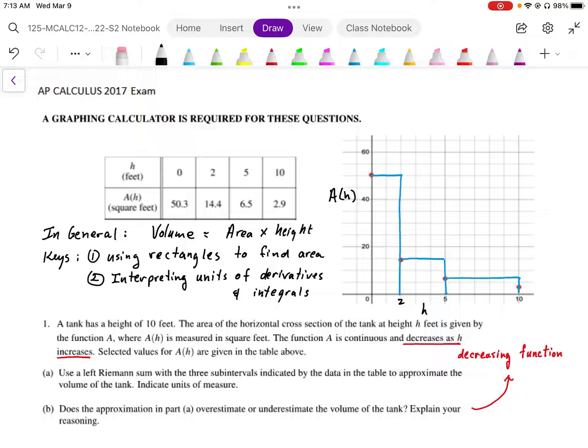Some of the keys: in general, volume equals area times height. This problem has given the function in terms of area, and along the x-axis is going to be height. So this is area as a function of height. Volume is going to be area times height. In this case, the height of this graph times the width of this graph will give us volume.